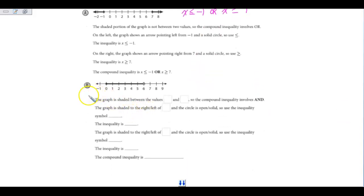Let's look at 3B. On this one, I see that I have a line that is continuous between the two dots, so I know I'm going to be using the word AND. And I can also start that with my variable being inside. I know that my points are going to be at 0 and 6.